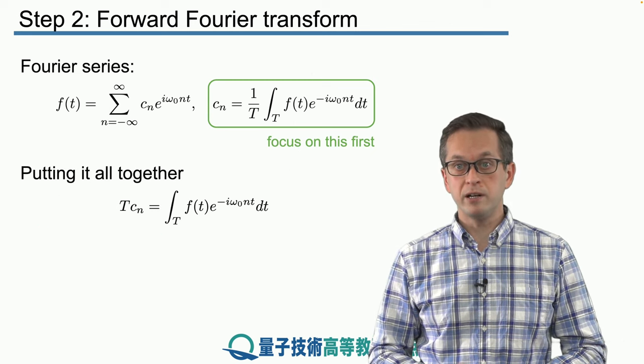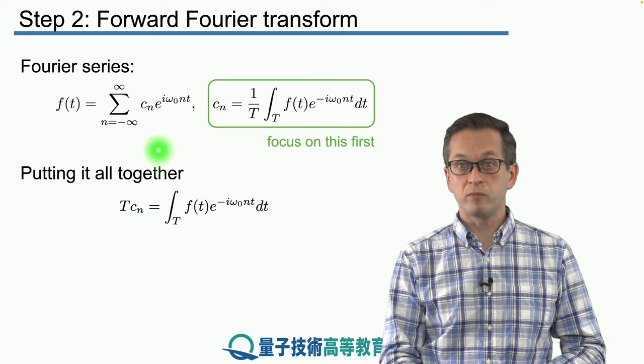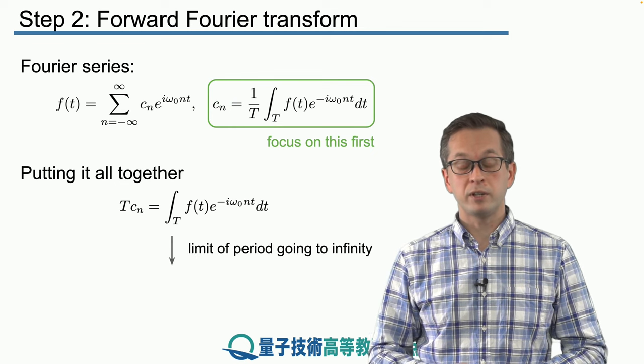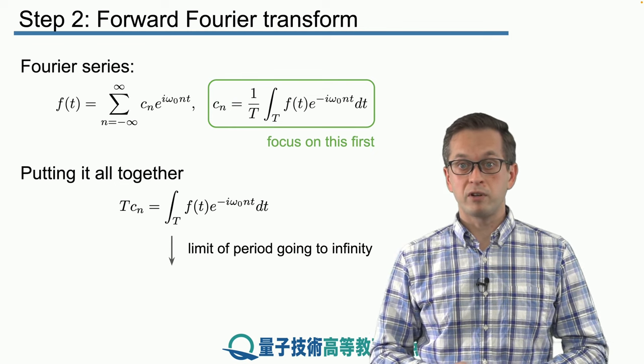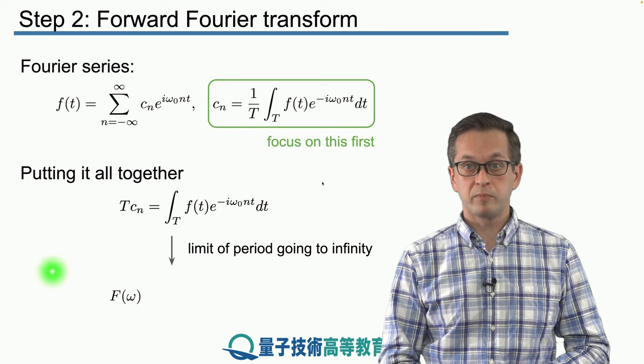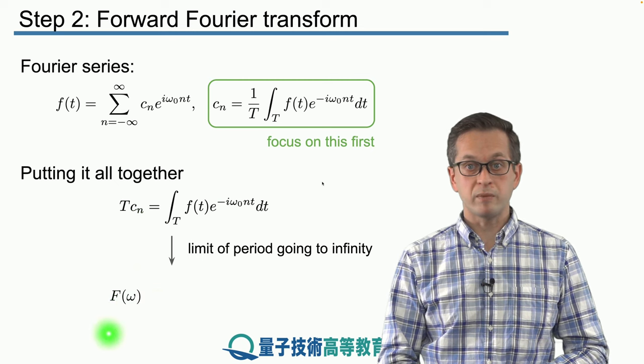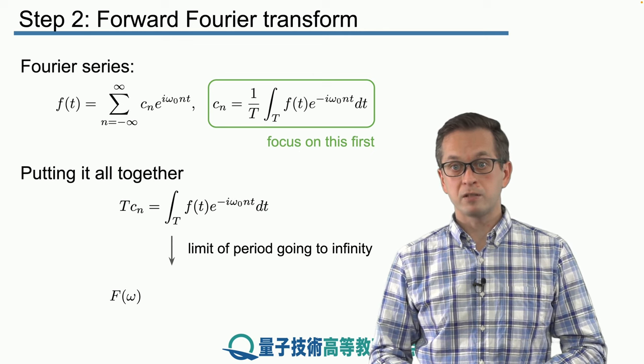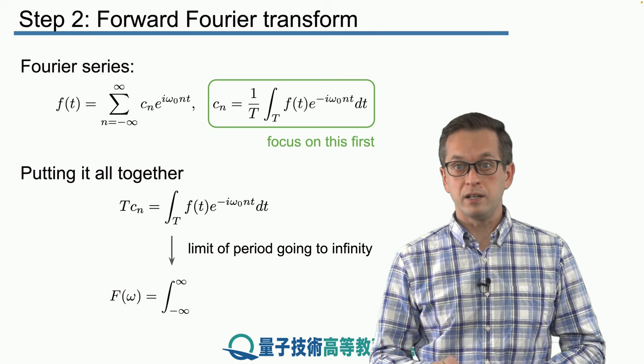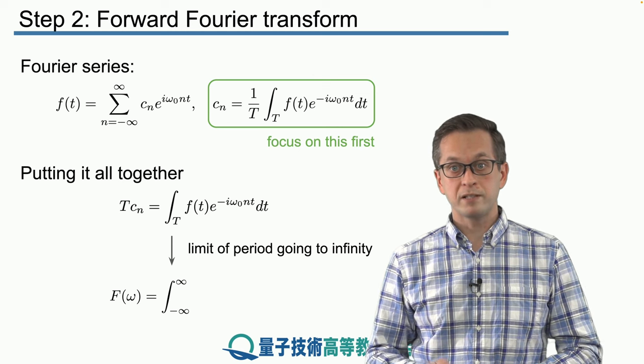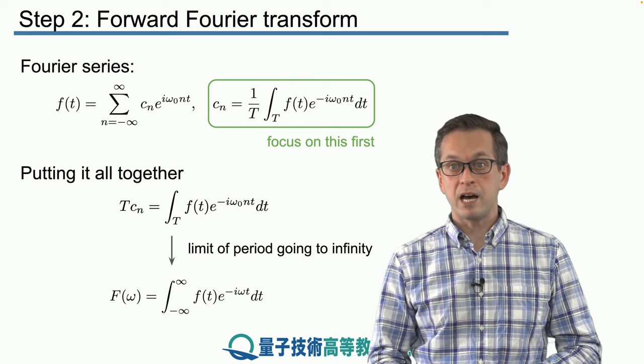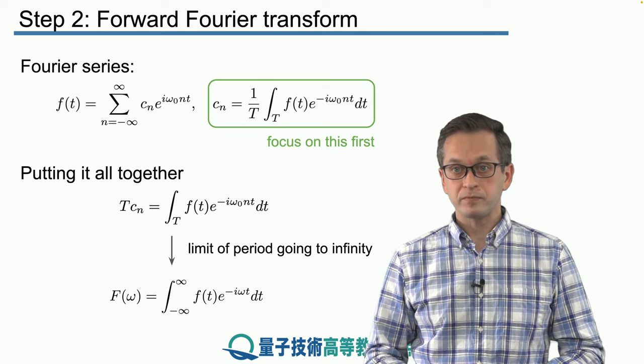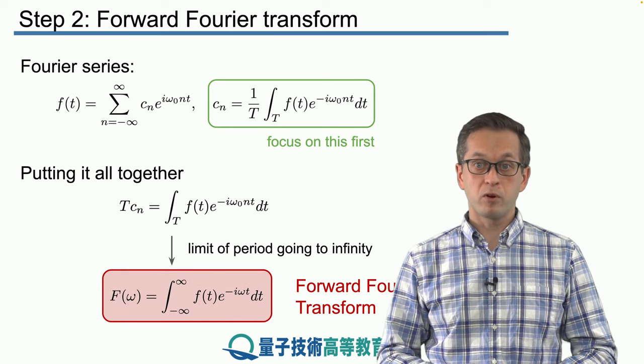So let's put all of these things together. Here, this is our initial expression, which came from this discrete Fourier series. And as we take the limit of the period going to infinity, we recover the following expression. We define the product of T times cn as some capital F, which is a function of our new frequency, continuous frequency omega. So F of omega is equal to the integral from minus infinity to plus infinity of our initial function times e to the power of minus i omega t. And this is nothing else but the forward Fourier transform.